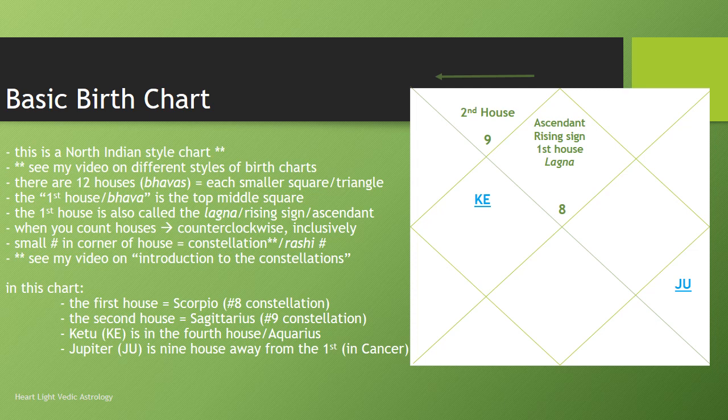The first house, so this is where we start counting and orienting ourselves — the first house or bhava is always the top middle square. I put in here, in the top middle square: ascendant, rising sign, first house, lagna. These are basically all synonyms for the same thing, different words for the same thing. So if I say the lagna, you know I'm talking about the first house. If I say ascendant, I'm still talking about the first house. If I say rising sign, I'm still talking about the first house.